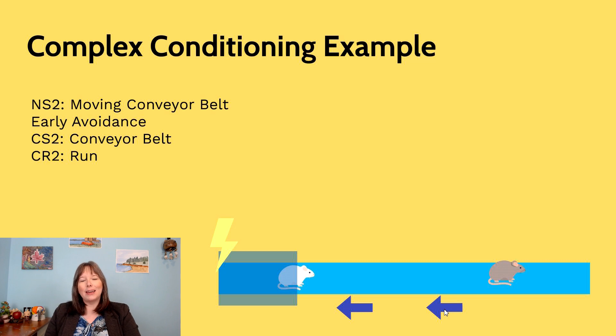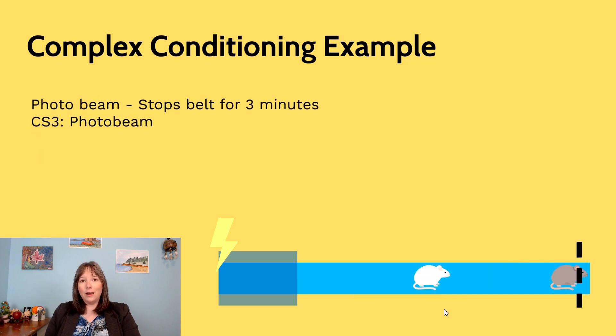Then we can make it even more complicated. We can make a photo beam shoot across the width of the conveyor belt at the opposite end. And if something blocks the photo beam, it can turn the conveyor belt off for three minutes.